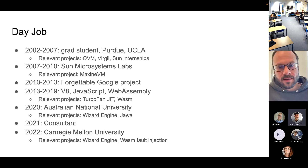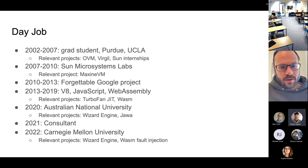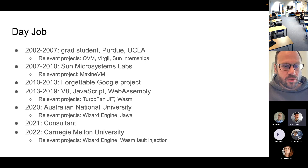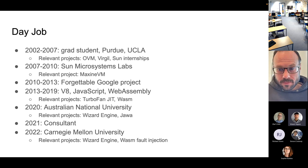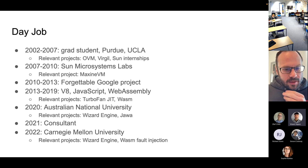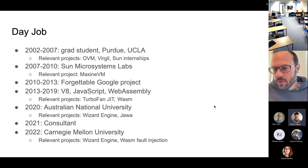I moved to Google and worked on things that were not language related, though I'm personally most interested in language implementation. Then I started working on V8 in Munich, on the Turbofan JIT compiler and the JavaScript implementation, which led to starting the WebAssembly project. In 2020 I had a plan to go to Australia — that turned out slightly different because of the pandemic — but I did get some research done, taught a course, and started working on Wizard, this WebAssembly engine.